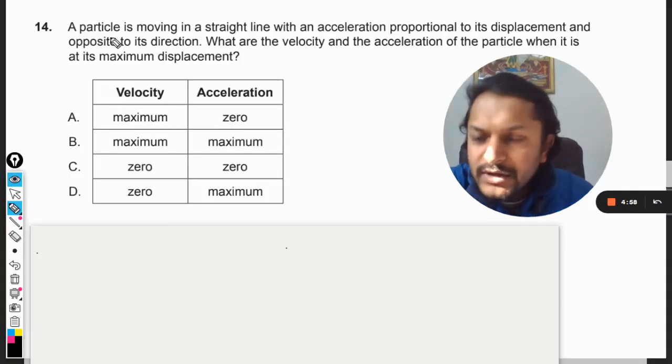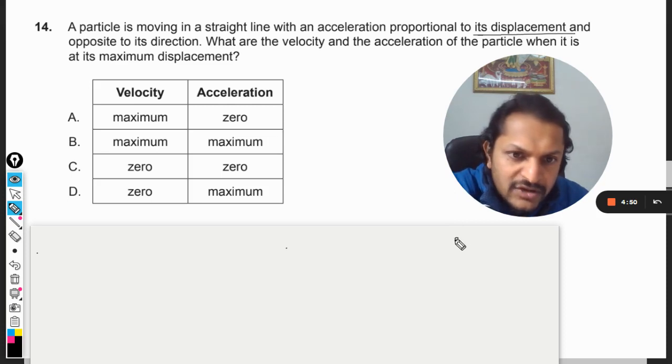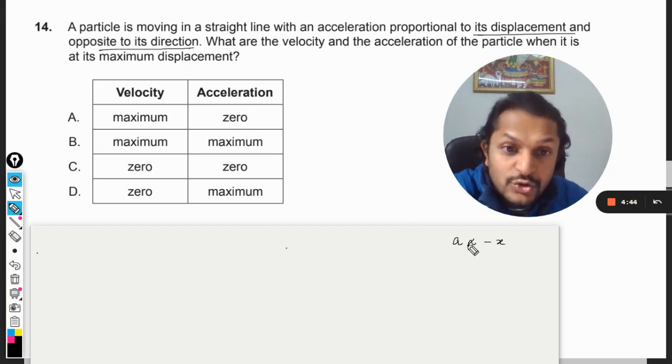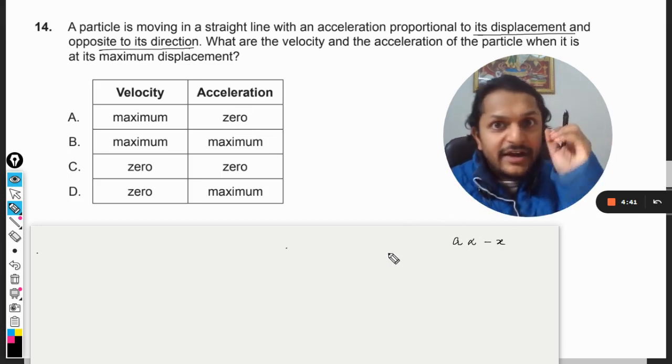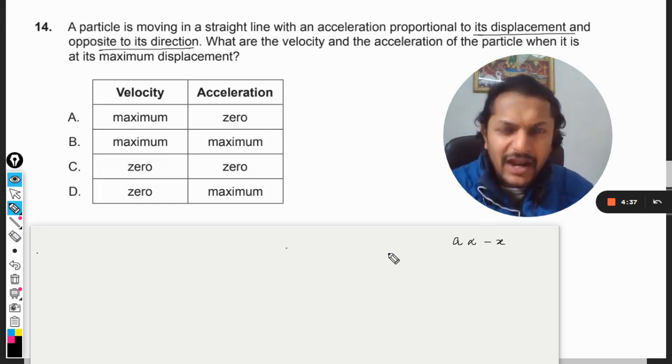Okay, dear students, let us see what is there in this question. A particle is moving in a straight line with an acceleration proportional to its displacement and opposite to its direction. So you can say that acceleration is directly proportional to the negative of displacement.